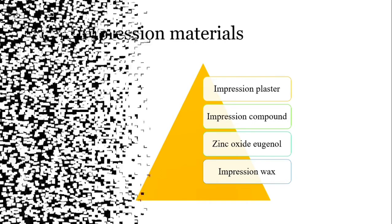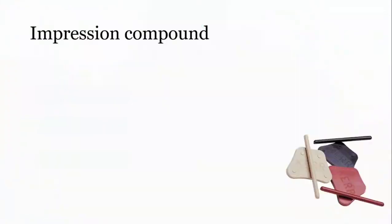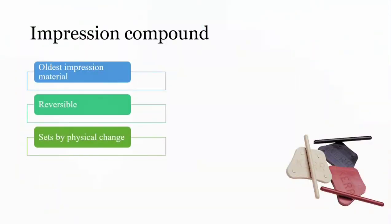Impression compound is one of the oldest impression materials used in dentistry. It is also called modeling plastic or modeling compound. This material, apart from being a rigid impression material, is also reversible—it sets by physical change. When you put it in hot water, it softens, and when the temperature is lost, it hardens again. This reversible property enables us to reuse the same material on the same patient. It is most commonly used in the primary impression of edentulous ridges.